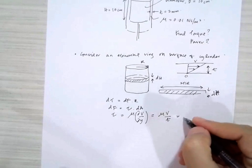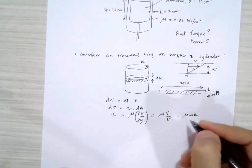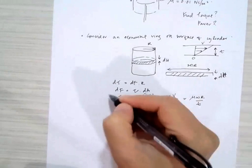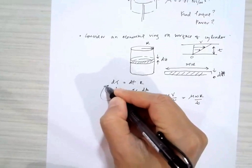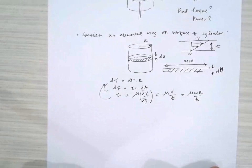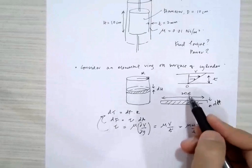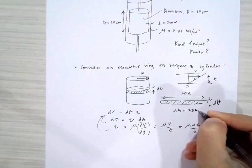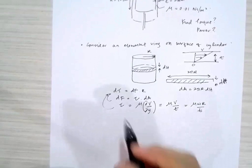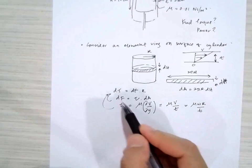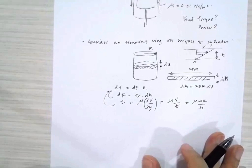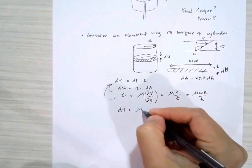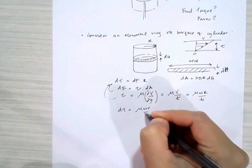The velocity will be equal to ωr divided by t. The area A is equal to 2πr dh. Now if we substitute dA, df, and τ into the first equation, we have dτ equal to μ ωr over t times 2πr dh times r.